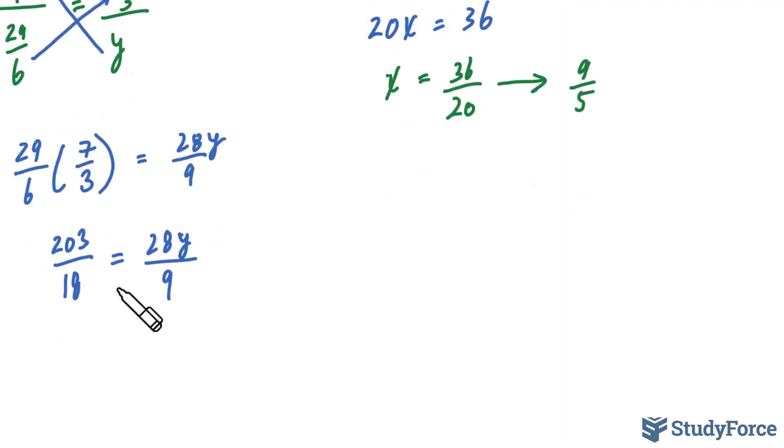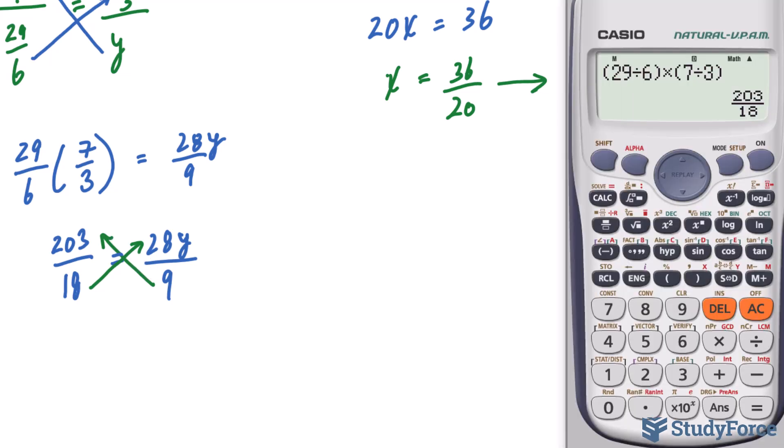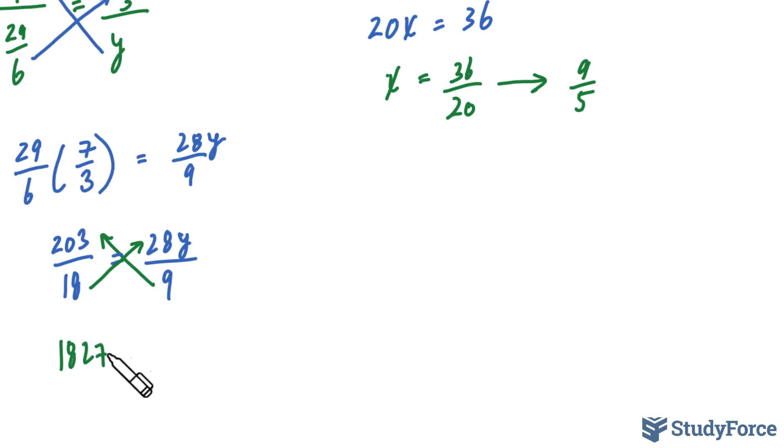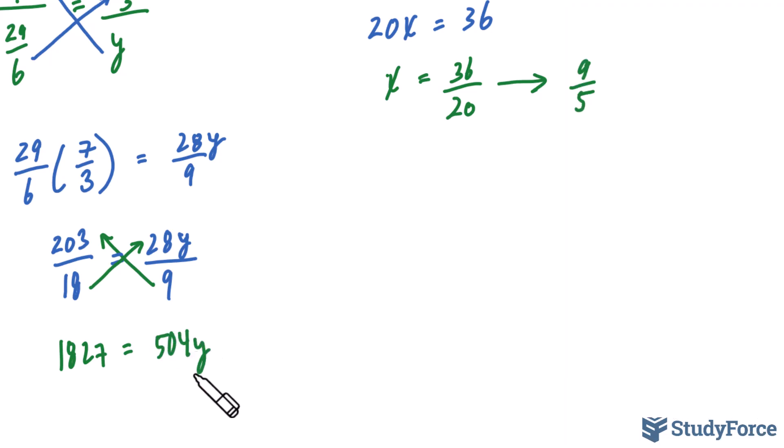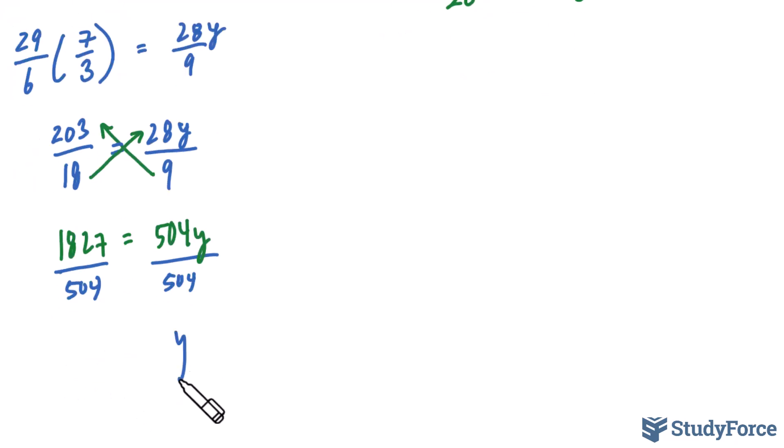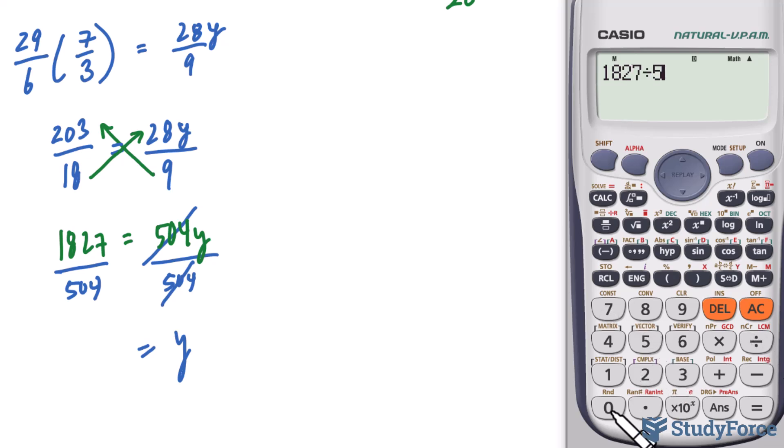We have to apply cross-multiplication one more time. 18 and 28y and 9 and 203. 9 times 203 makes 1827. And 18 times 28 makes 504. Don't forget to write the y next to 504. If we divide both sides now by 504, we can let our calculator do the rest. So we have y is equal to 1827 divided by 504. And our final answer is 29 over 8.